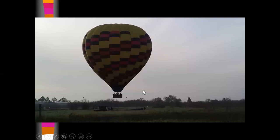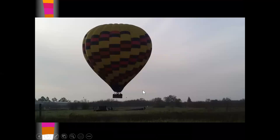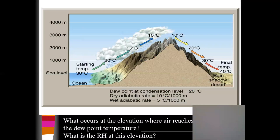We have a moist or wet adiabatic rate, which is five degrees Celsius for every 1,000 meters that the air rises. The reason the wet adiabatic rate is lower than the dry adiabatic rate is because of condensation. Condensation is taking place inside the cloud, and never forget — condensation is a warming process for the air.